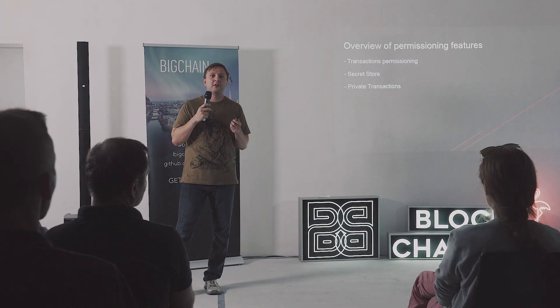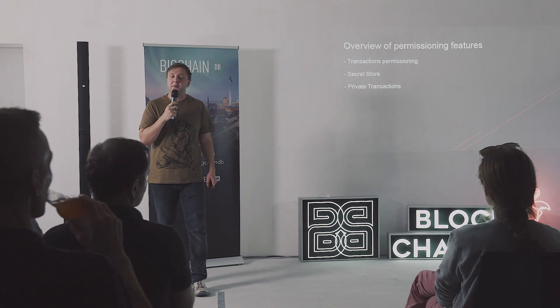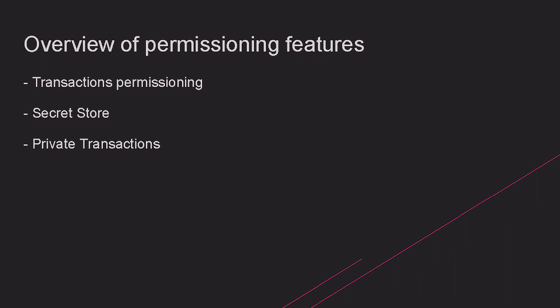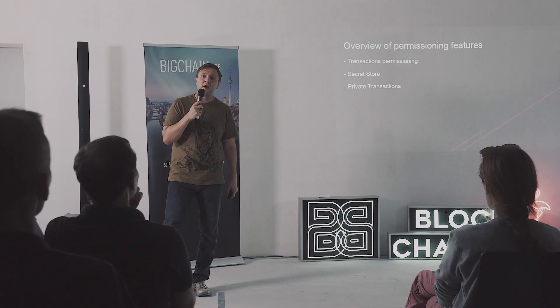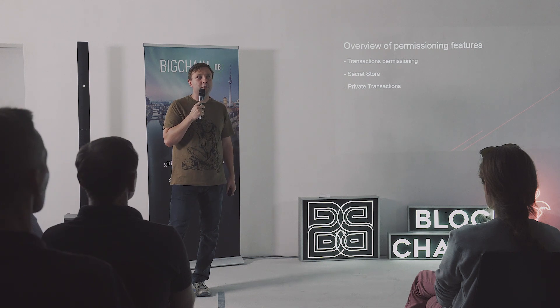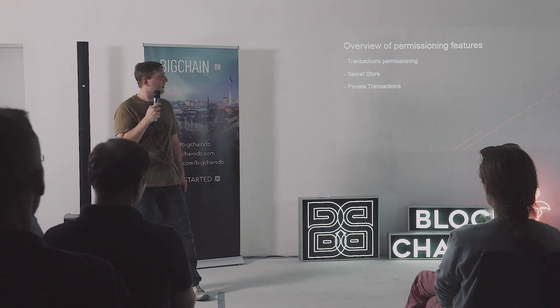Private transactions is only one part of what we offer. Here I list three major components, though there are more. The first is transactions permissioning — using Parity, you can deploy your network and assign permissions to nodes, such as creating contracts, calling contracts, creating transactions, and so on. The second major part I call permissioning features is the secret store.